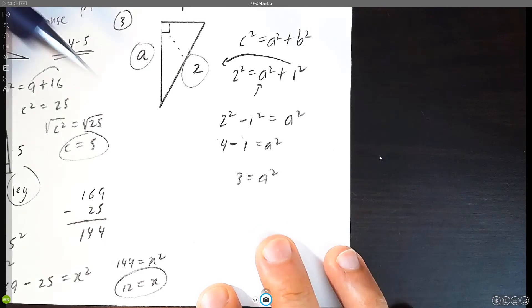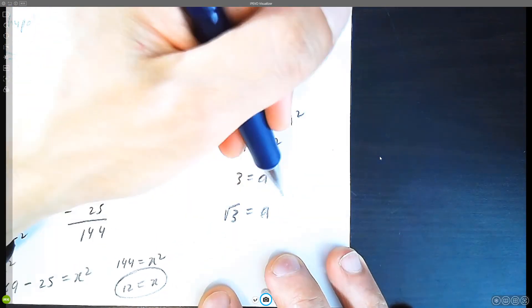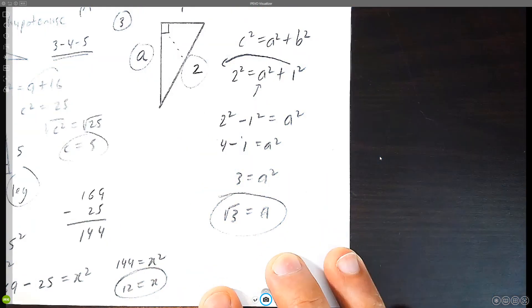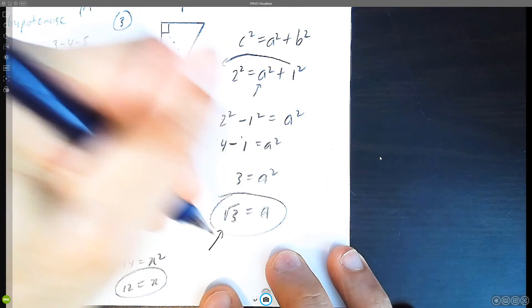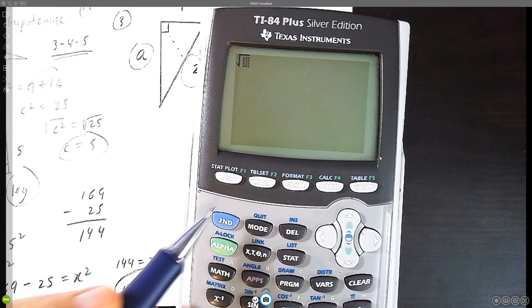And then we're going to simply square root both sides. So a equals root three. This here is an exact answer. If you really want to use your calculator, you can hit the square root button.